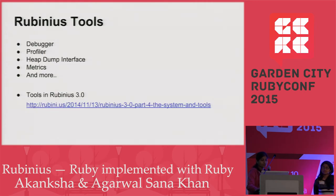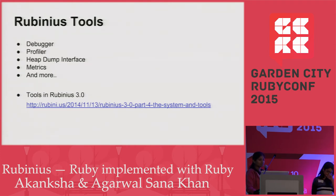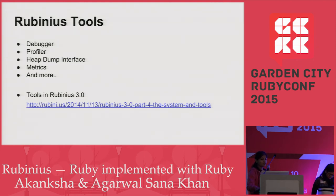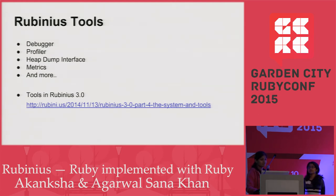These are the different tools which Rubinius provides. Debugger and profiler are provided by Rubinius and are written in Ruby itself. The heap dump interface is also a very good tool, which Sana will be explaining about. If we get time, we'll cover metrics and more as well.